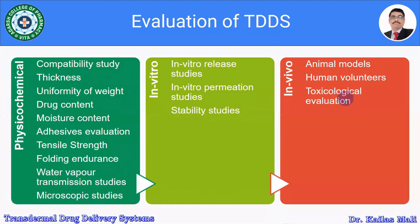In vitro studies include in vitro release, in vitro permeation, and stability studies. In vivo studies use animal models, human volunteers, and toxicological evaluation of the transdermal patch. For physicochemical tests, the very first is the compatibility study, performed for excipients — the polymer used in the transdermal patch and the drug.